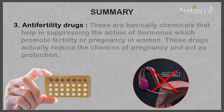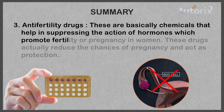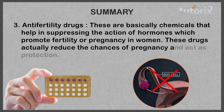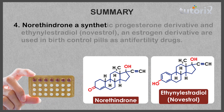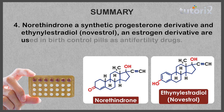Anti-fertility drugs: these are basically chemicals that help in suppressing the action of hormones which promote fertility or pregnancy in women, and actually reduce the chances of pregnancy and act as protection. Northindrone, a synthetic progesterone derivative, and ethinyl estradiol, an estrogen derivative, are used in birth control pills as anti-fertility drugs.